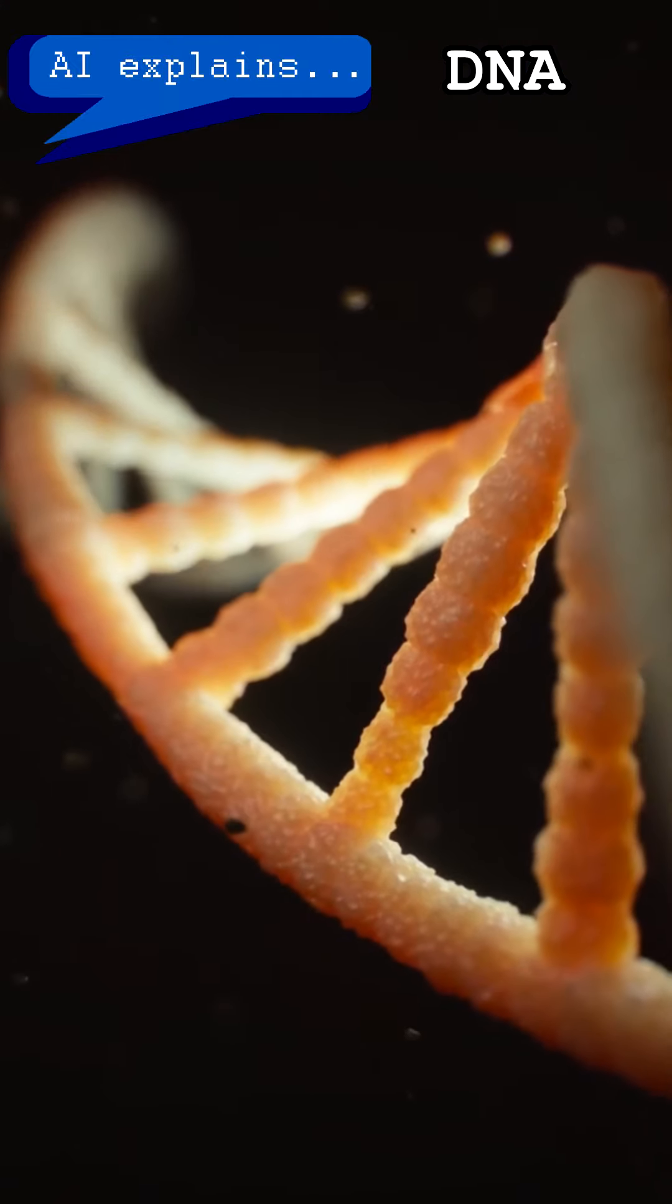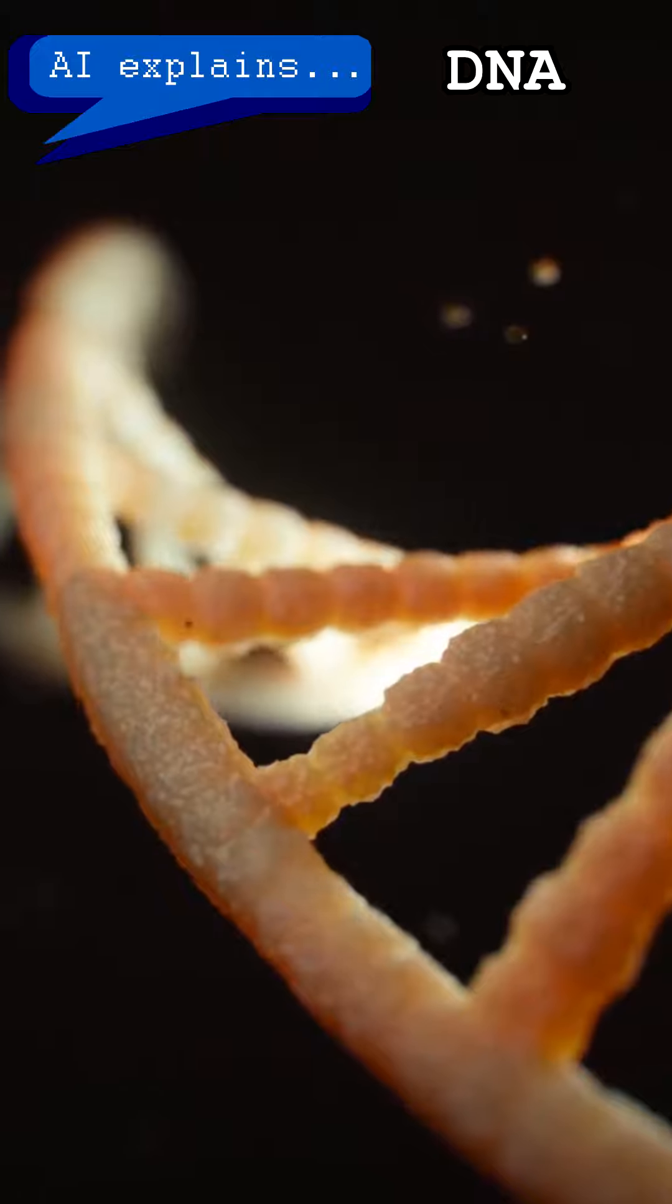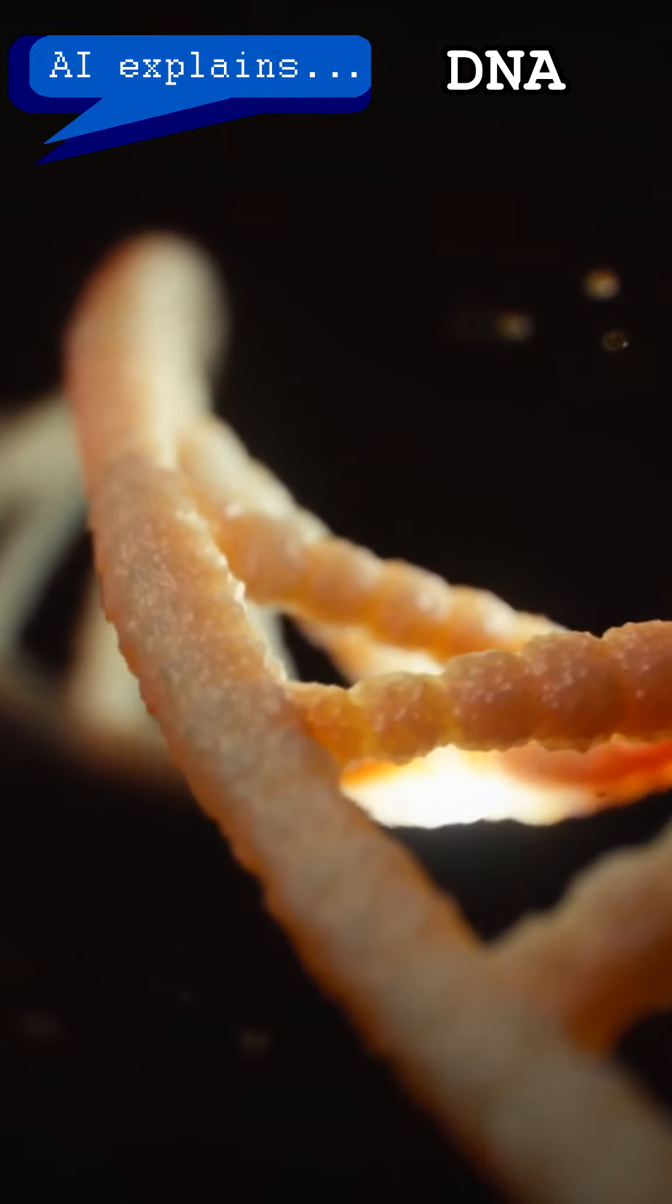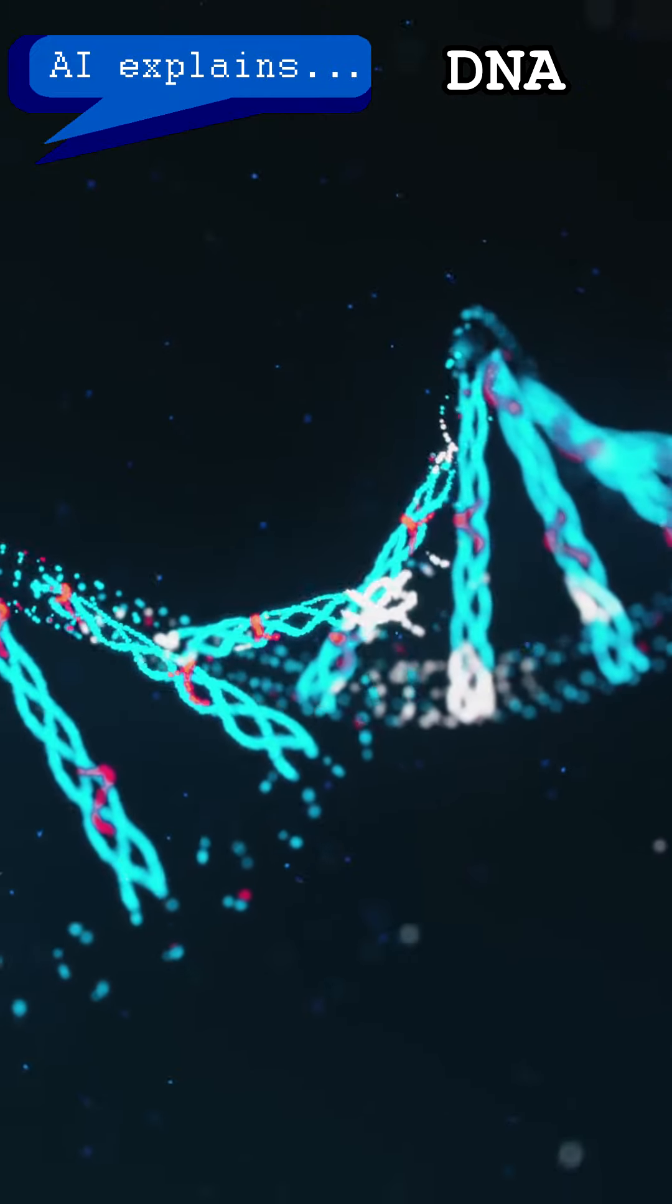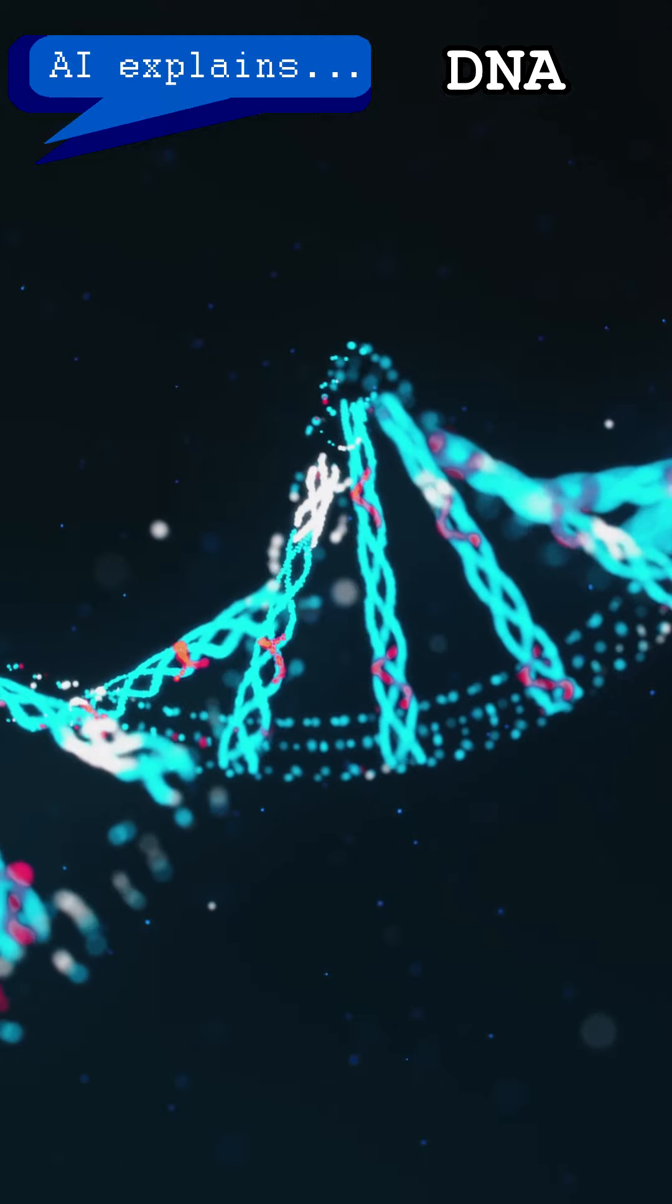But wait, there's more! DNA also has a special structure, like a twisted ladder called a double helix. This structure is important because it helps protect the DNA code from damage and make sure that it's passed down from one generation to the next.